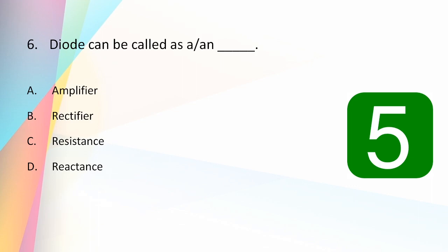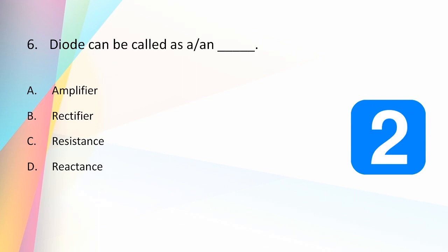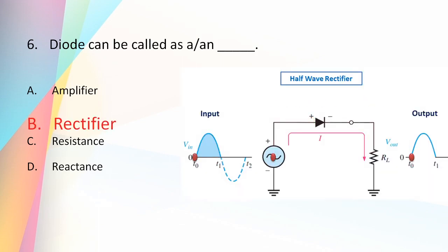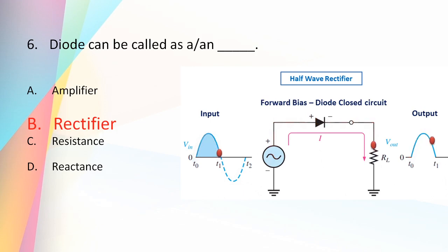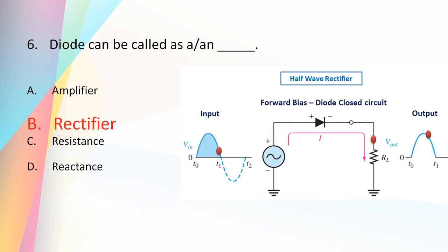Diodes can be called a rectifier — a device that converts alternating current, which periodically reverses direction, to a direct current. This process is known as rectification. A single diode works as a half-wave rectifier: during the positive half cycle it is forward biased and conducts, and during the negative half cycle it is reverse biased and acts as an open switch, so only the positive half appears at the output.